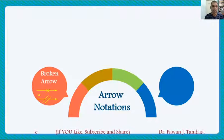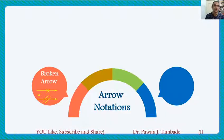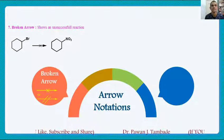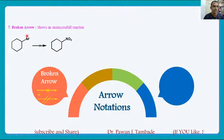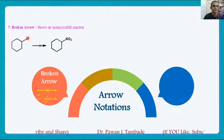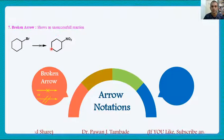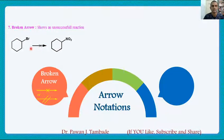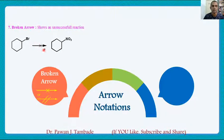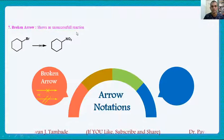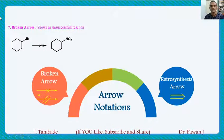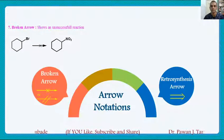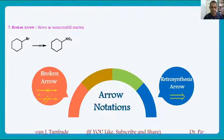The next arrow used is the broken arrow. The broken arrow is used to show unsuccessful reactions. For example, if I tried to convert cyclohexyl bromide into a particular compound and failed to achieve this transformation, such a reaction is shown with the help of the broken arrow. This arrow is used to show unsuccessful reactions.